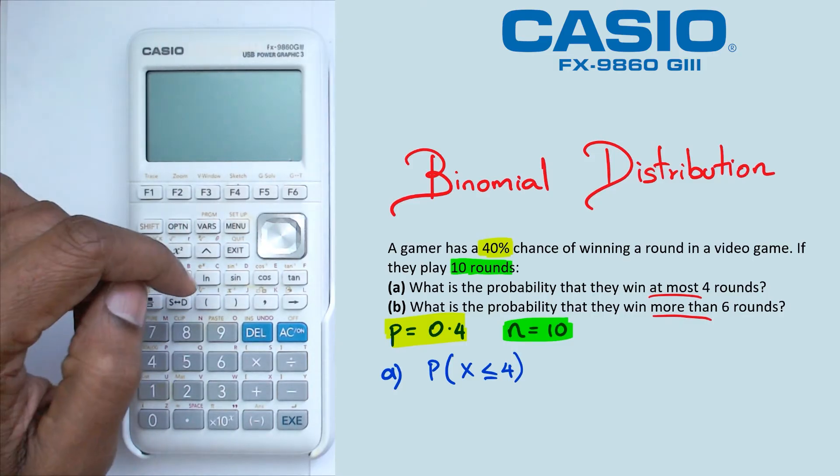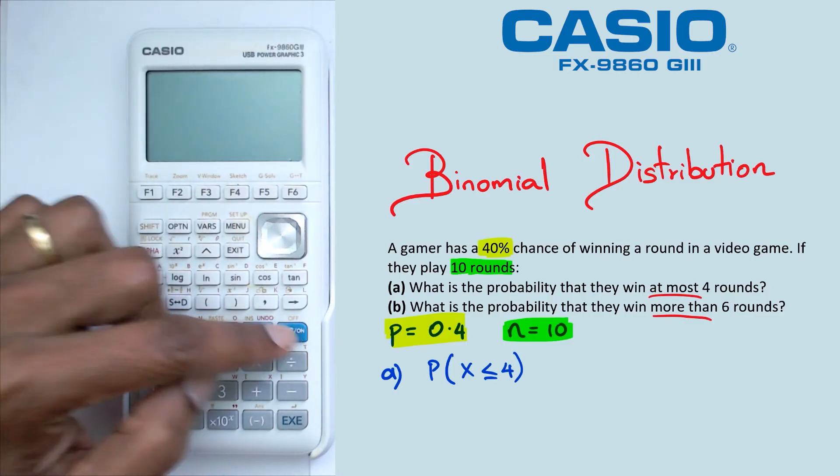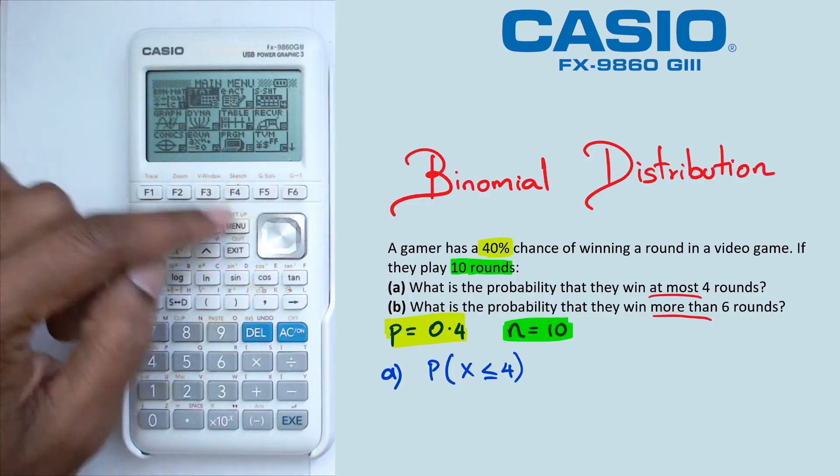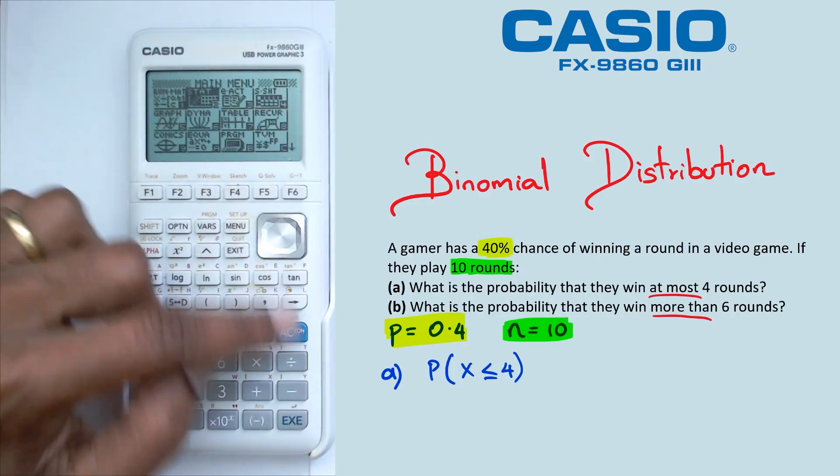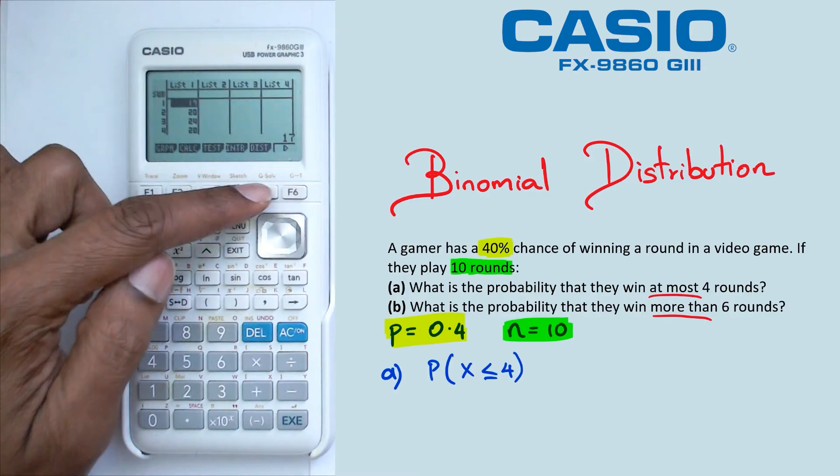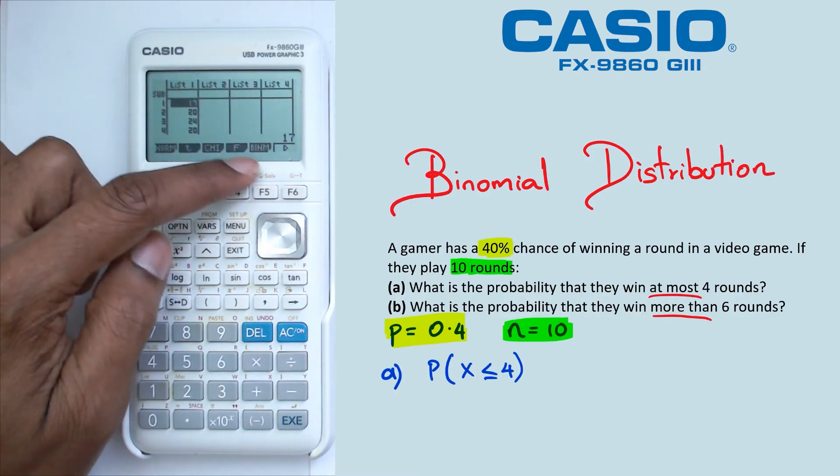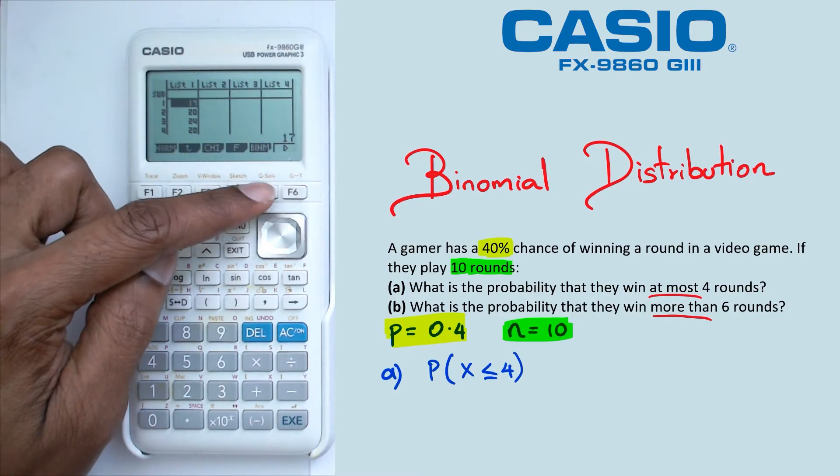So the way we're going to calculate this is switch on the calculator, go into main menu, go into stat mode. Then we're going to go into distribution, which is F5. We're going to click on binomial, which is also F5.